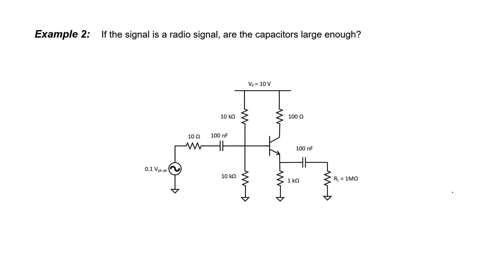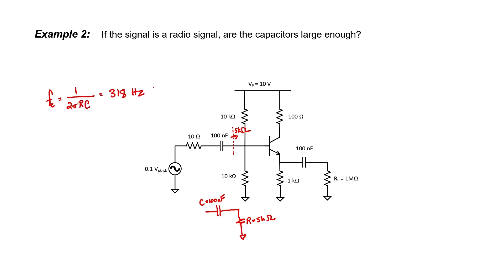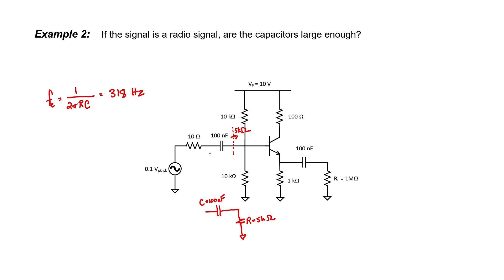The one thing we haven't considered is whether the capacitors are sized correctly. Example 2 asks: if the signal is a radio signal, are the capacitors large enough? The input impedance from the AC signal's perspective is 5 kiloohms. This forms a high-pass filter with a corner frequency given by 1 over 2πRC, which works out to 318 Hz. Radio signals have frequencies in the hundreds of kilohertz or megahertz range — far above 318 Hz — so the AC signal will have no trouble passing through the 100 nF capacitor. You might even say the capacitor was oversized; a 1 nF capacitor would have worked just fine.